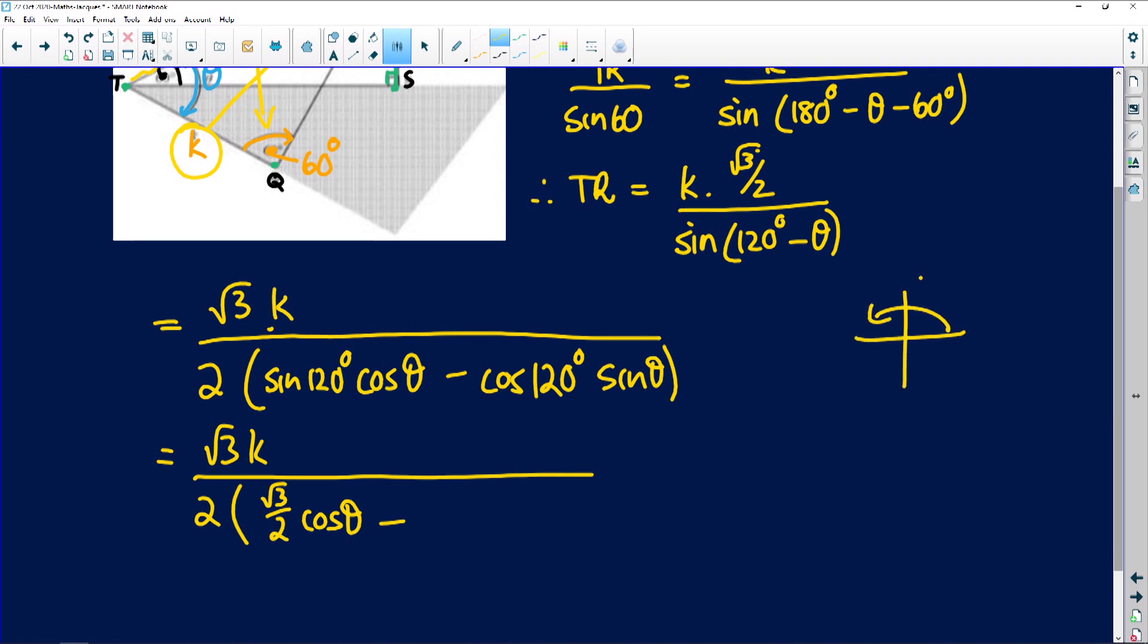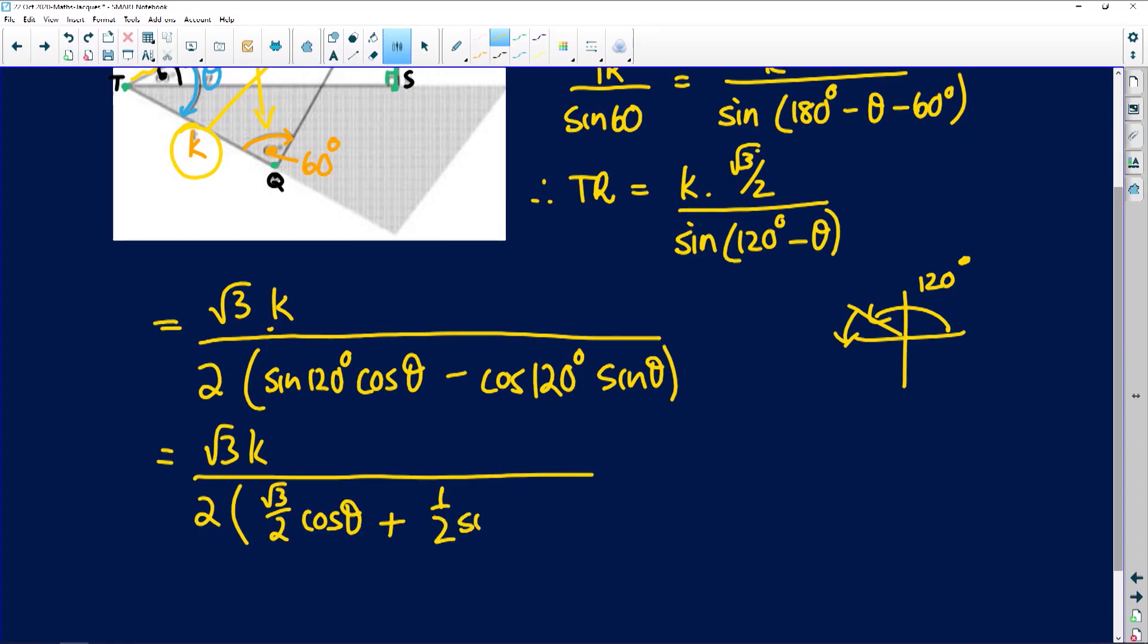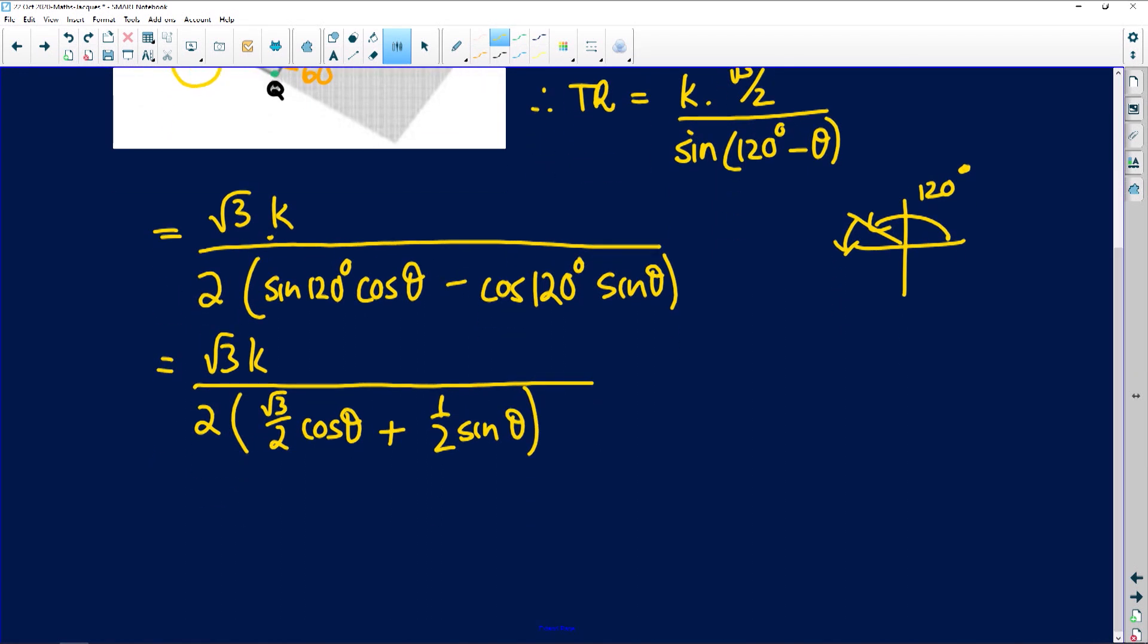Now the cosine of 120, 120 is a second quadrant angle, it is 60 degrees away from 180. So this minus becomes a plus and this reduces to the cosine of 60, and the cosine of 60 we all know is a half. We don't need a calculator for that, we're clever enough to know that.